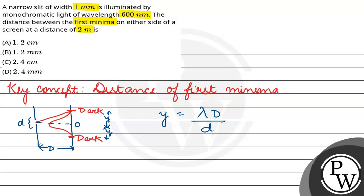We have the value of 2y. So 2y equals 2 times lambda D by d. Let's put values here. We have 2 into lambda, which is 600 times 10 raised to the power minus 6 mm, into 2 into 10 raised to the power 3 mm, by 1 mm.